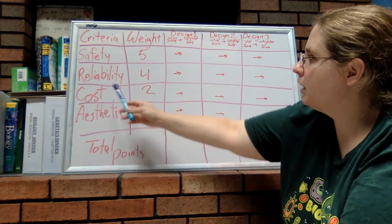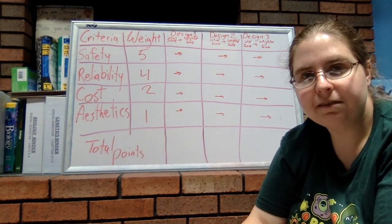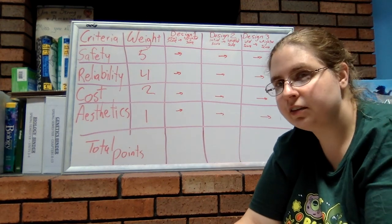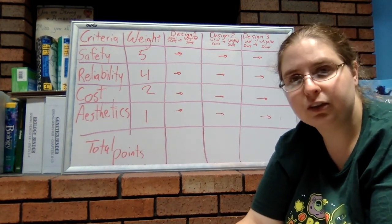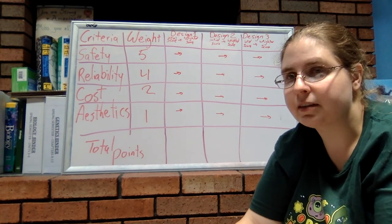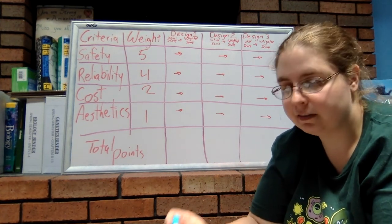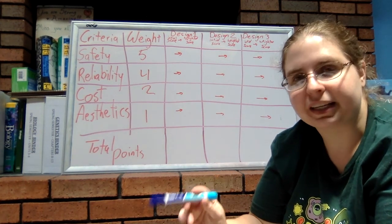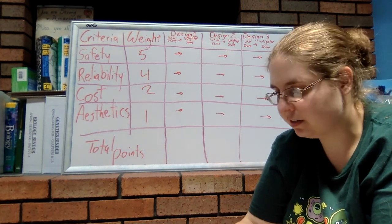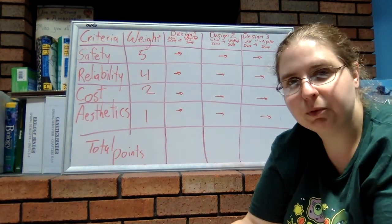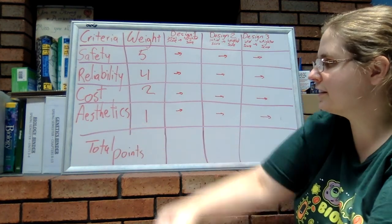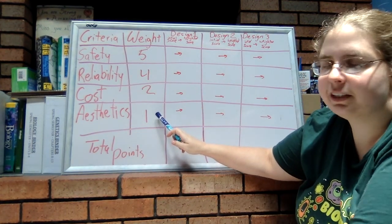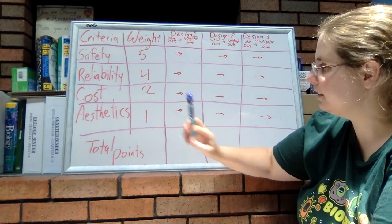Reliability is next with a weight of four. Cost has a weight of two—it's good if it's cost-effective and not too expensive, but if it is the absolute best at filtering out virus, bacteria, unwanted minerals, and chemicals from the water system, then people might be willing to pay a little bit more. And aesthetics—that's the least important. Even if it looks like crap, if it works awesome, then that's what's important.